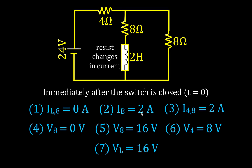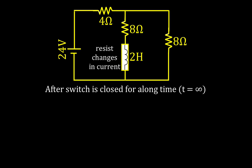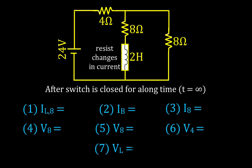After the switch has been closed for a long time, the current reaches its maximum and stops changing. With no change in current, there's no induced voltage across the inductor — it acts like a straight wire with 0 volts across it. Now the circuit is effectively two 8-ohm resistors in parallel, giving an equivalent of 4 ohms, which is in series with the 4-ohm resistor, for a total of 8 ohms.